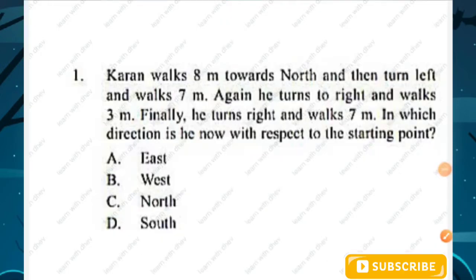Question number one: Kurent walks eight meters towards north, then turns left and walks seven meters. Again he turns to the right and walks three meters. Finally he turns right and walks seven meters. In which direction is he now with respect to the starting point?